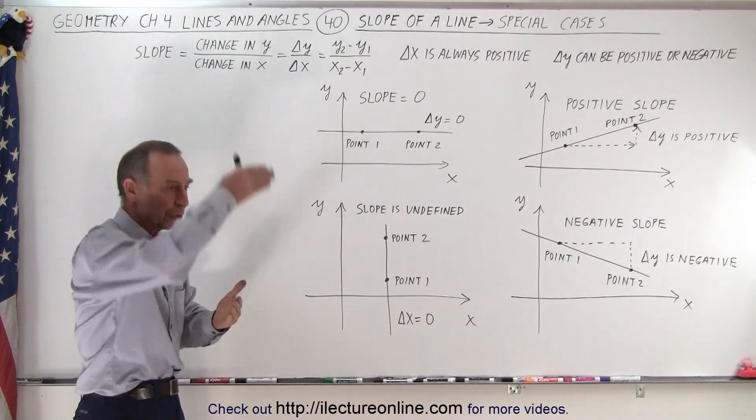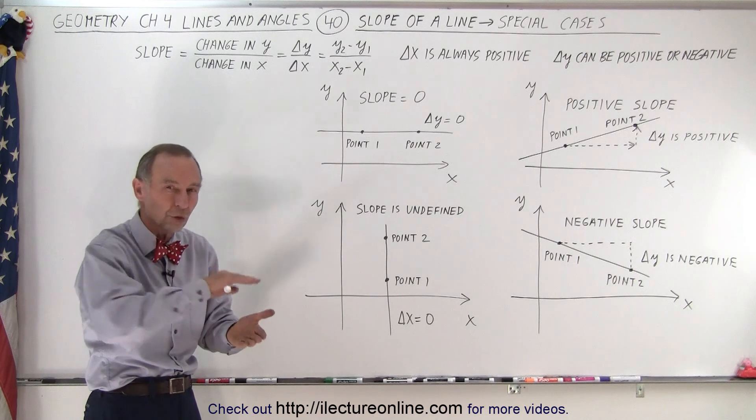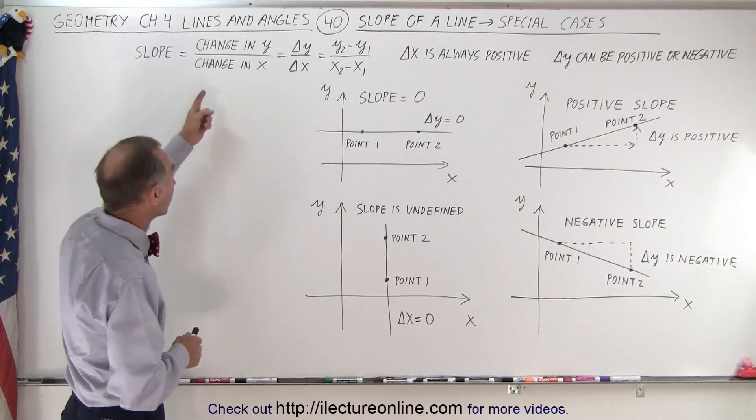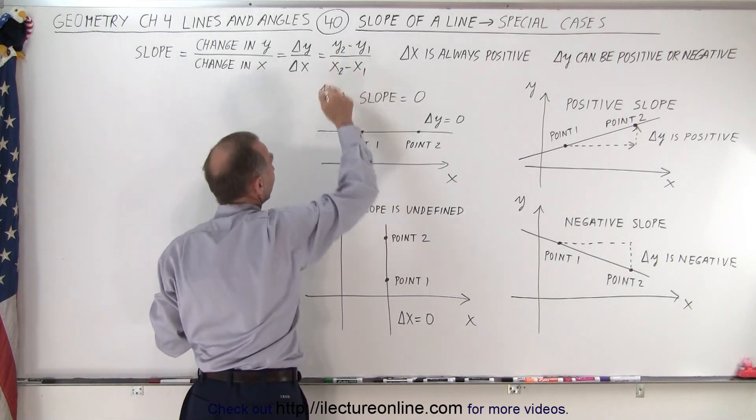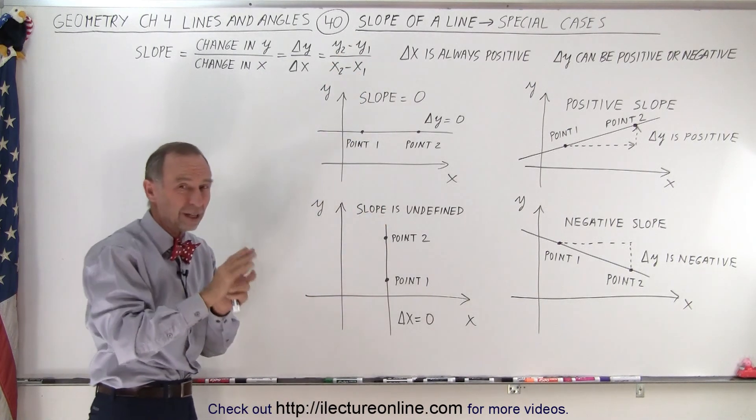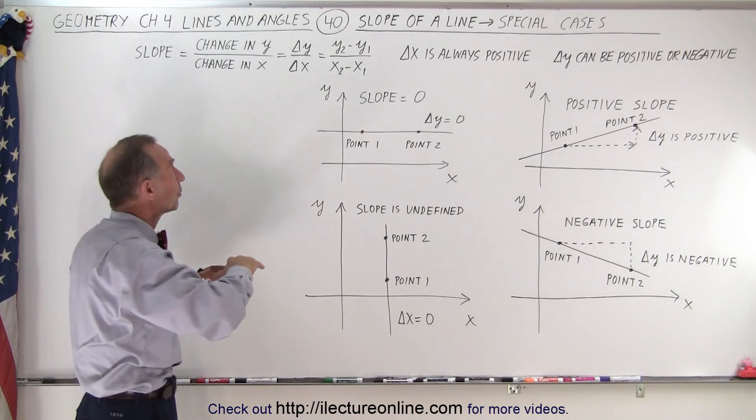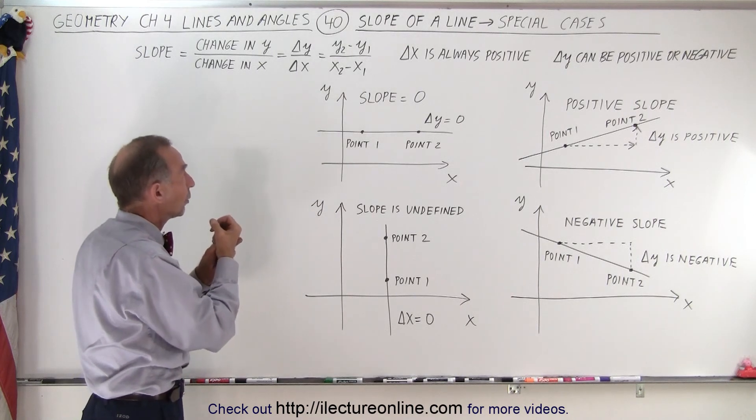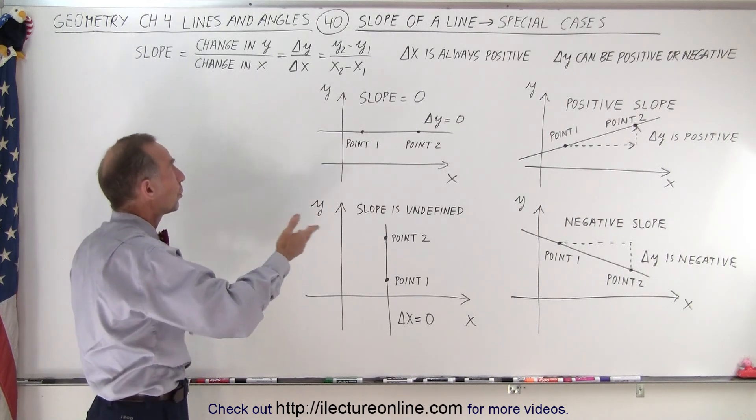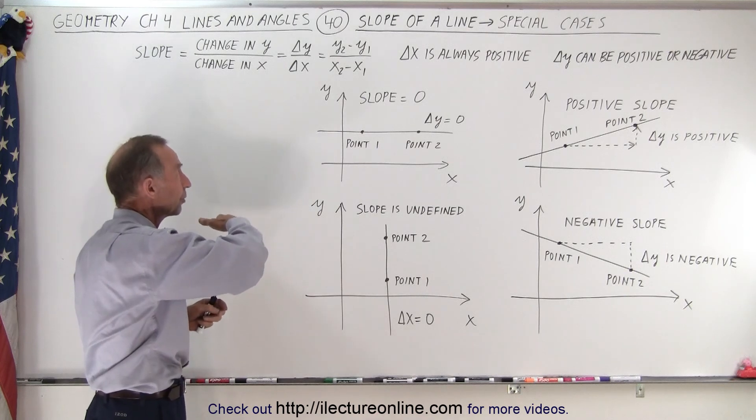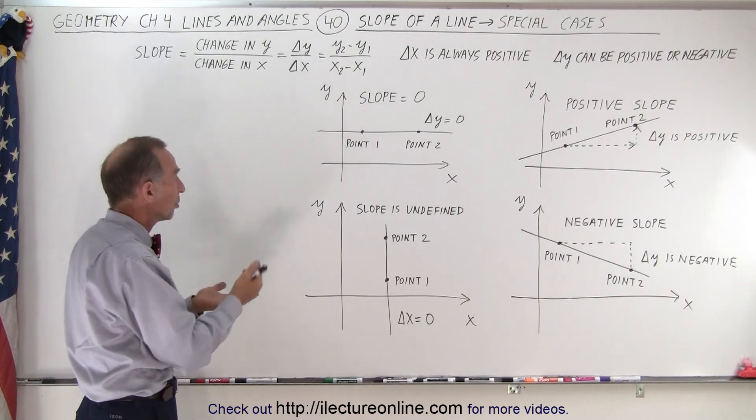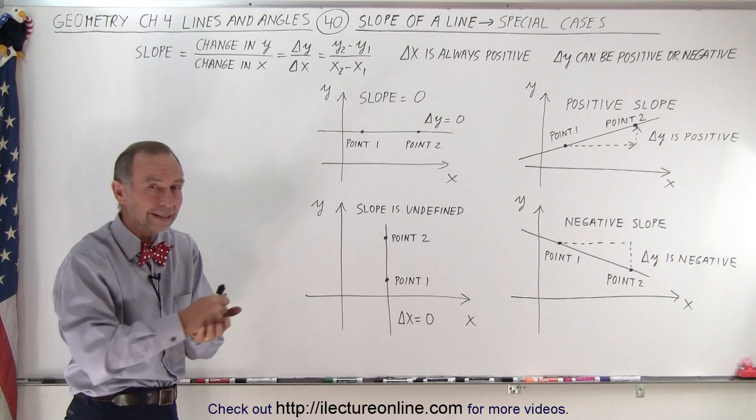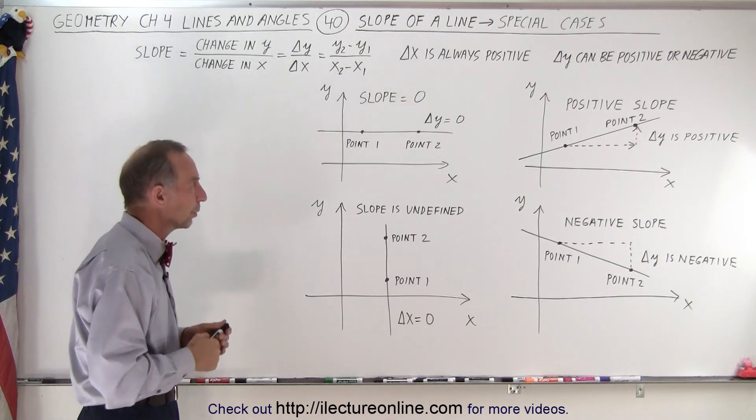The change in Y being the vertical change and the change in X being the horizontal change. The vertical change, called the change in Y, can be found by subtracting the Y values of two points on the line, with the second point being to the right of the first point. To find the change in Y, we take the Y value of the second point, subtract the Y value of the first point. To find the change in the X direction, we take the X value of the second point, subtract from that the X value of the first point.